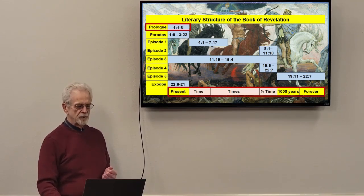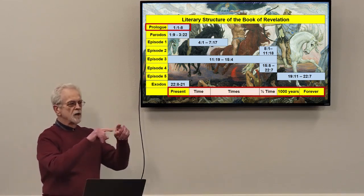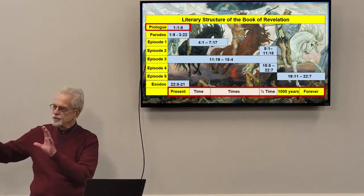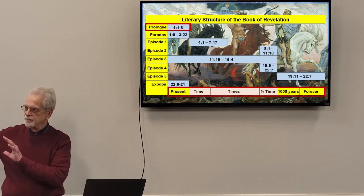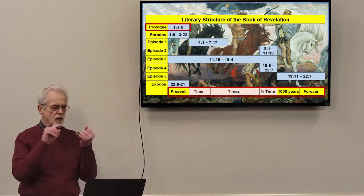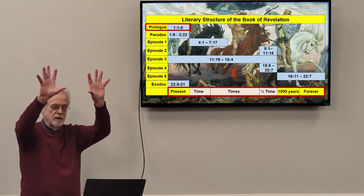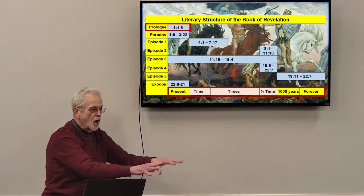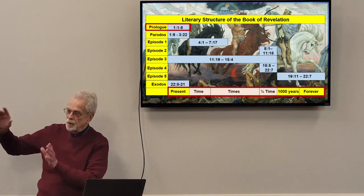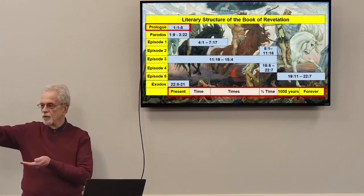Scholars have pointed out for many years that there are cycles within the book of Revelation — sets of events that are described more than once. Others have pointed out that these cycles follow a pattern. Each cycle starts with a vision of something going on up in heaven, and the events of heaven then have their fulfillment on earth. Those events are described, and they all lead up to a time of praise and adoration towards the living God and the Lord Jesus Christ.